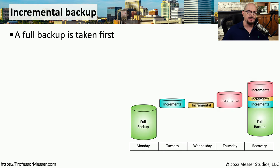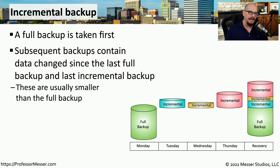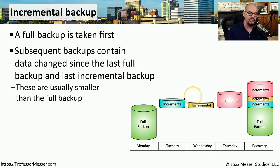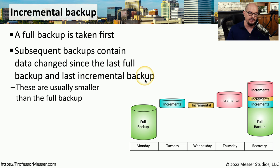An incremental backup starts exactly the same as a differential backup, where we take a full backup before we do anything. The next backup will be an incremental backup that contains changes that have occurred since the last full backup. On this first day, this is very similar to the differential backup. However, things change on the next backup day, where we're only going to back up things that have changed since the last full backup and since the last incremental backup. This means this backup could be very small if nothing has changed since the last incremental backup. Each day of the incremental backup, we are copying anything that has changed since the last full backup and the last incremental backup.